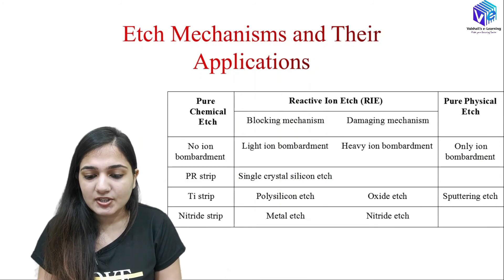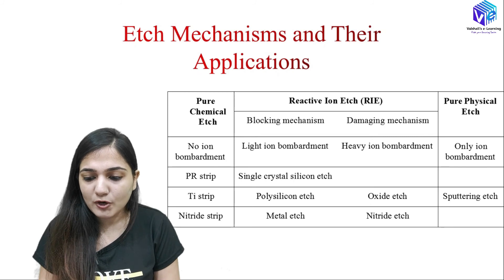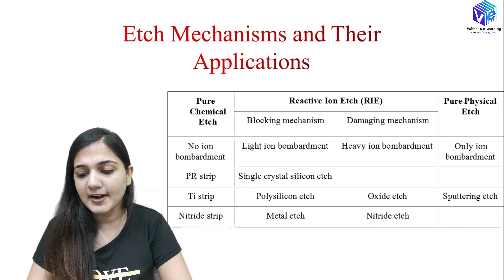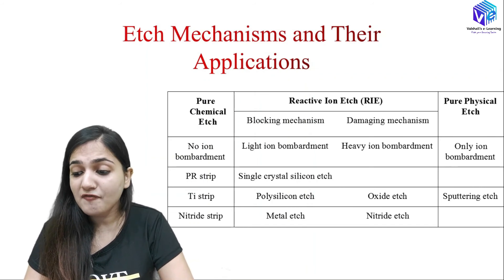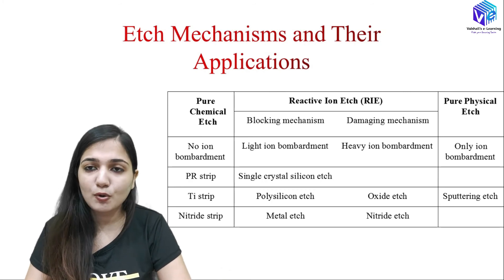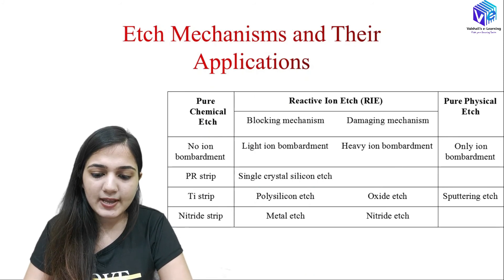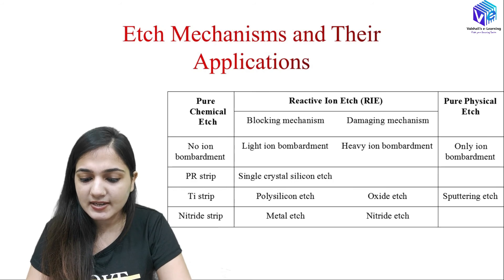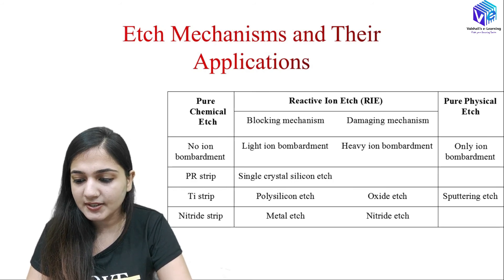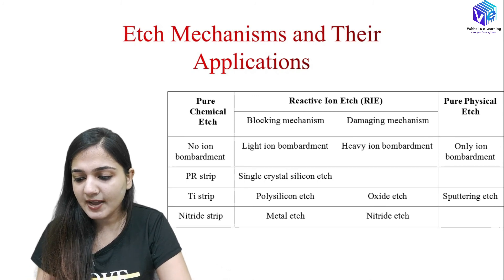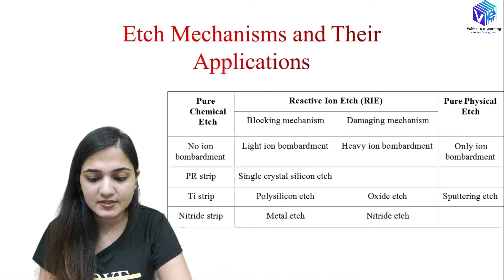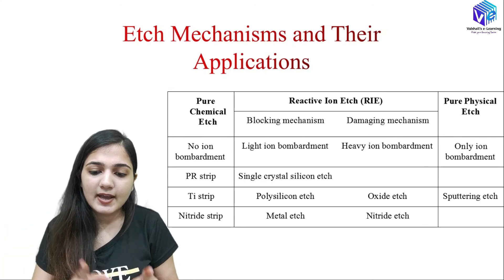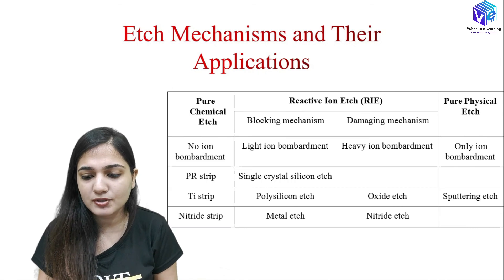Now, etchant mechanisms and their applications. In RIE we have the blocking mechanism and the damaging mechanism: blocking uses light ion bombardment, damaging uses heavy ion bombardment. In pure physical etching, only ion bombardment is used with no chemical reaction. In pure chemical etching, no bombardment is used. For the blocking mechanism: single crystal silicon etch, polysilicon etch, and metal etch. For the damaging mechanism: oxide etch and nitride etch. Pure physical etching uses sputtering etch. Pure chemical etching includes photoresist strip etch, titanium strip etch, and nitride strip etch. For blanket layer removal, chemical etching is used; for pattern making, RIE etching is used.